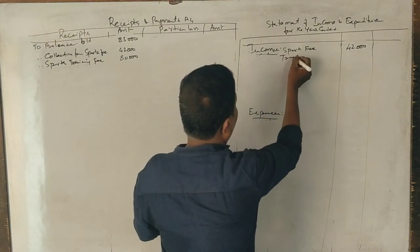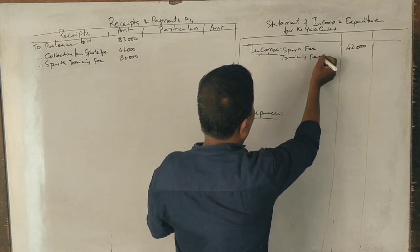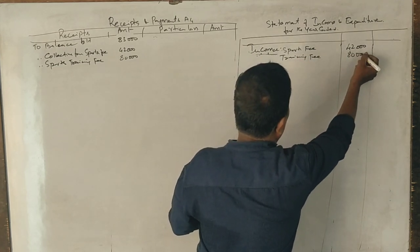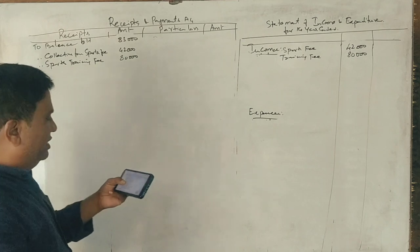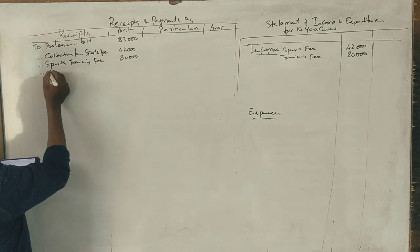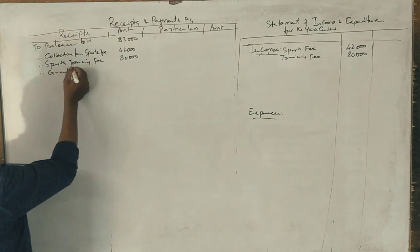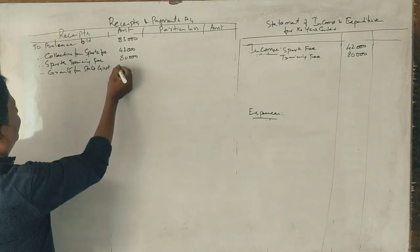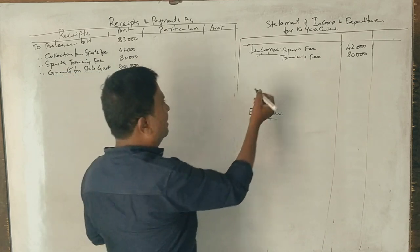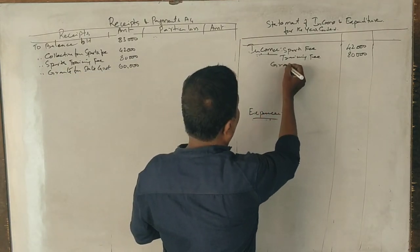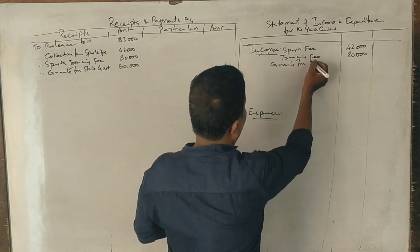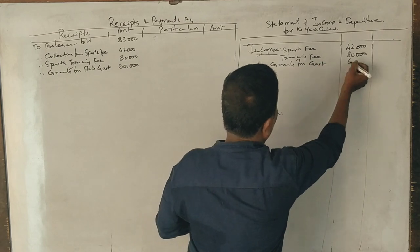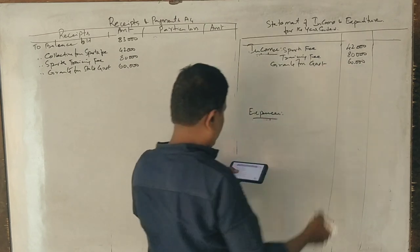Next, grants from state government, 60,000. State government, yes sir, 60,000. Grants from government, 60,000.